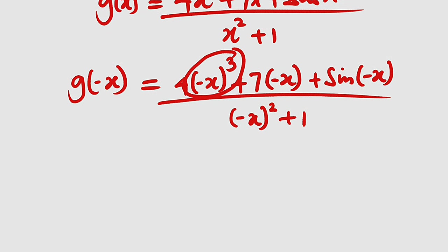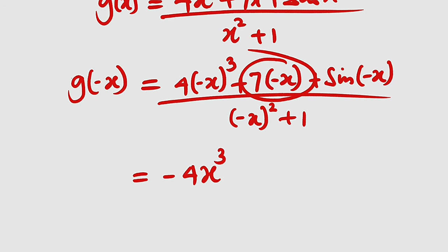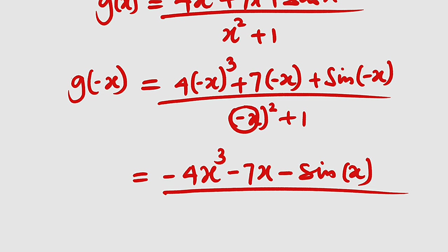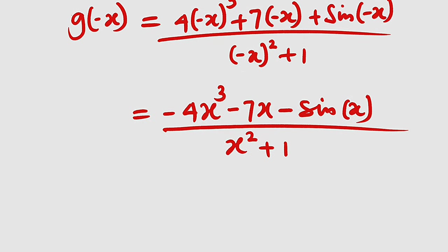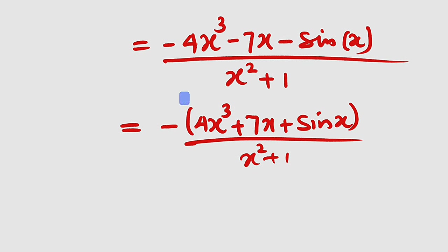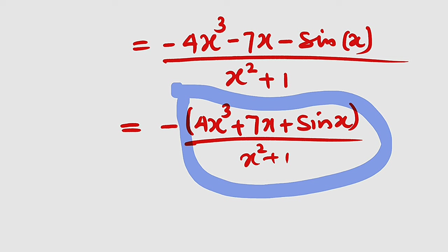Let us simplify. (−x)³ = −x³, so 4(−x)³ = −4x³. Then 7 times (−x) = −7x. Remember that sin(−x) = −sin(x). And (−x)² = x², so the denominator is x² + 1. All three terms share a factor of negative, so factoring it out gives: −(4x³ + 7x + sin(x)) / (x² + 1). If you observe, this is exactly g(x).